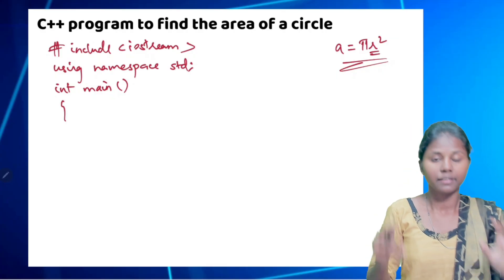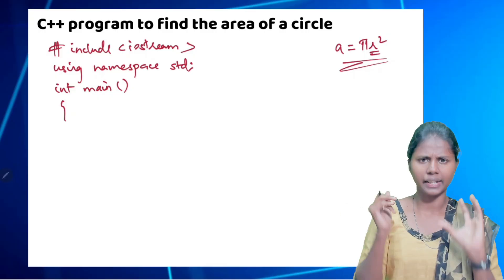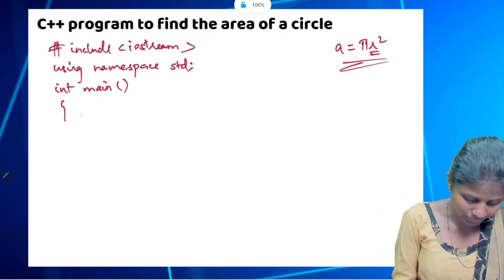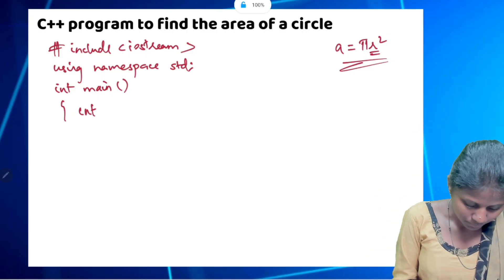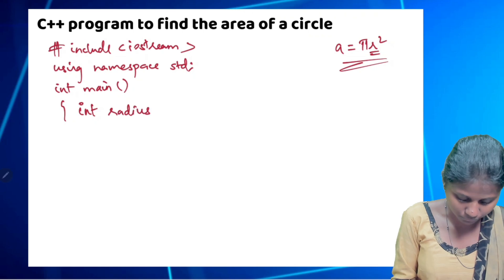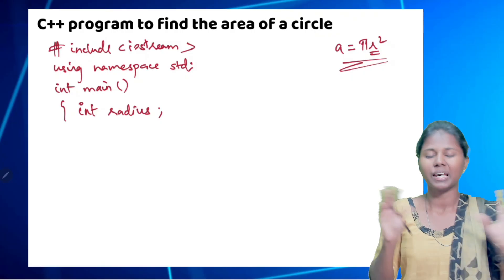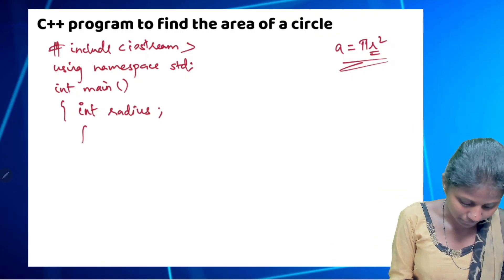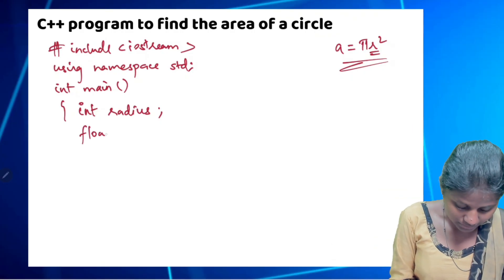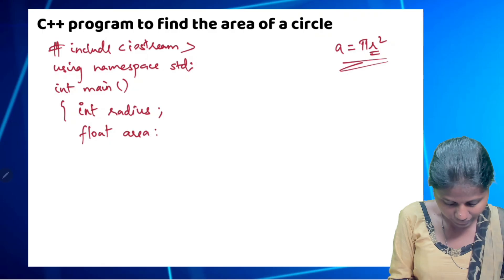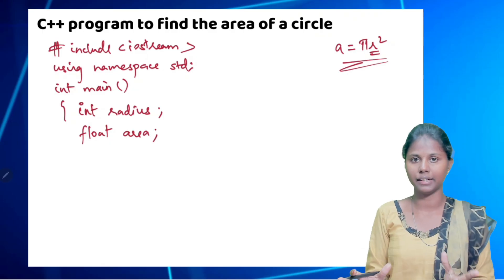If you want to store the radius, write int radius or r. That is one variable. And since including pi in the area will give decimal values, we declare float area.